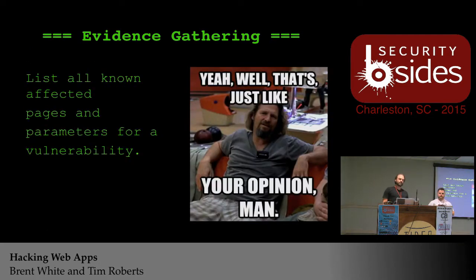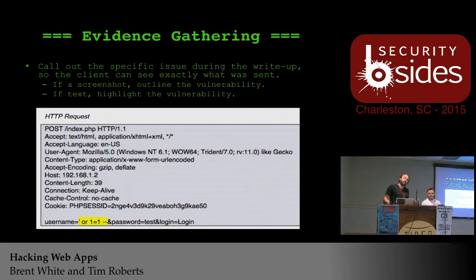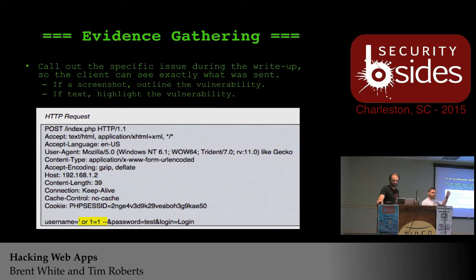List all known affected pages and parameters for vulnerabilities. If you just put one parameter — say you ran a Nessus scan, found a vulnerable parameter, and only reported that one — did you look at all affected pages and all parameters? Make sure to test all parameters. If the username field is vulnerable to SQL injection, also test the password field and any other parameters. In the report, list all parameters vulnerable to SQL injection, for example.